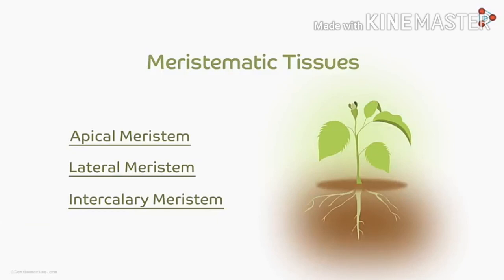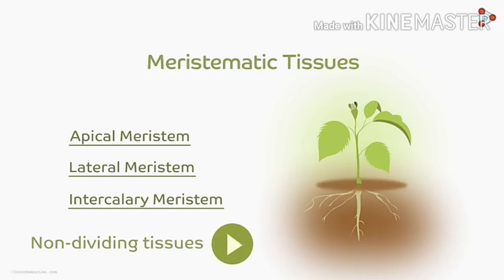So, apical meristem, lateral meristem, and intercalary meristem — these are all characteristics of dividing tissues. As for non-dividing tissues, we will study those in our next class. Goodbye!